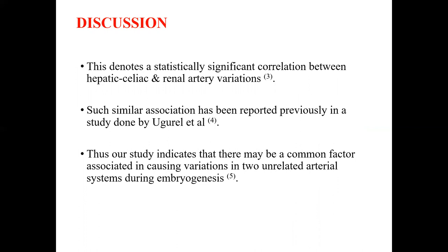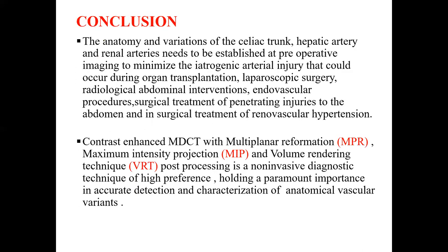A similar association has been reported previously in the study by Goral et al. Our study indicates that there may be some common factor associated with causing variation in two unrelated arterial systems during embryogenesis. In conclusion, the anatomy and variation of the celiac trunk, hepatic artery, and renal artery need to be established at preoperative imaging to minimize iatrogenic arterial injury that could occur during organ transplantation, laparoscopic surgery, radiological abdominal intervention, endovascular procedures, surgical treatment of penetrating abdominal injuries, and surgical treatment of renal vascular hypertension.